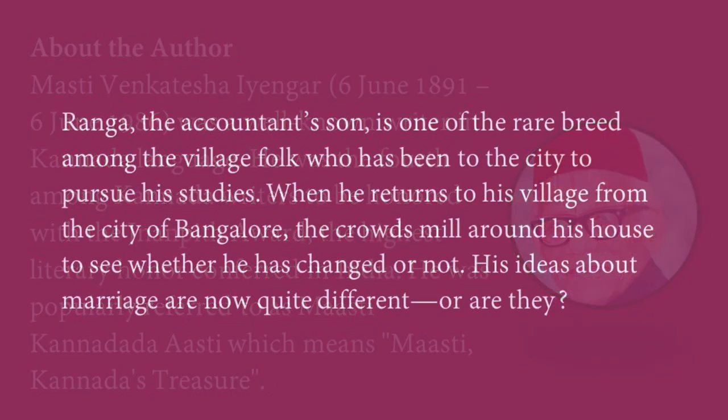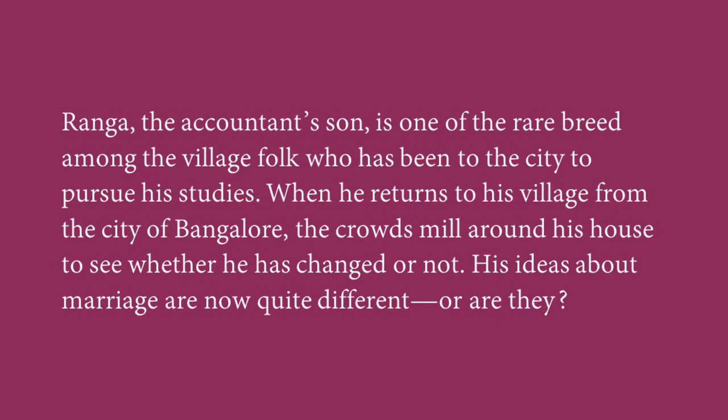This story is about a conflict that runs around tradition and modernity. This conflict occurs in the mind of Ranga, the hero of the story, against his beliefs on marriage. He actually falls in love with an 11-year-old girl. Ranga, the accountant's son, is one of the rare breed among the village folk who has been to the city to pursue his studies.